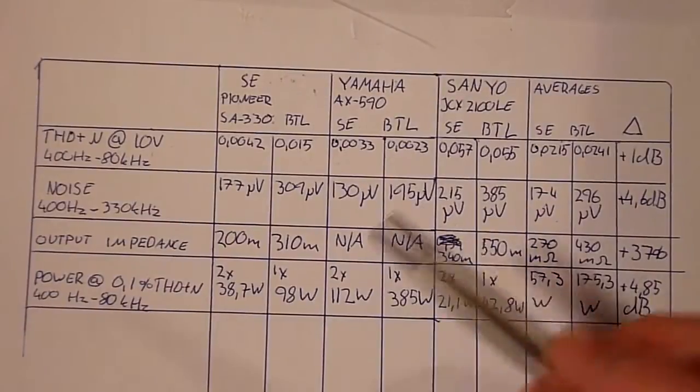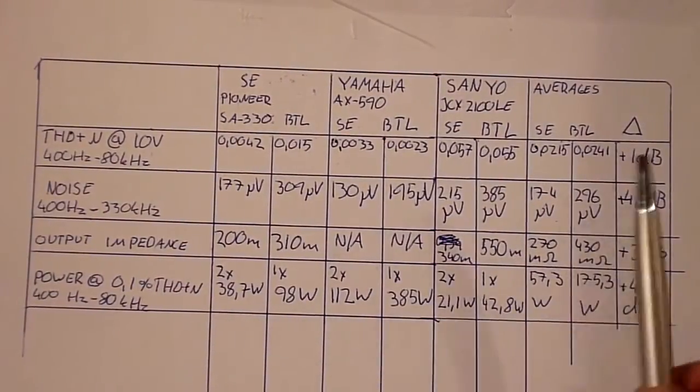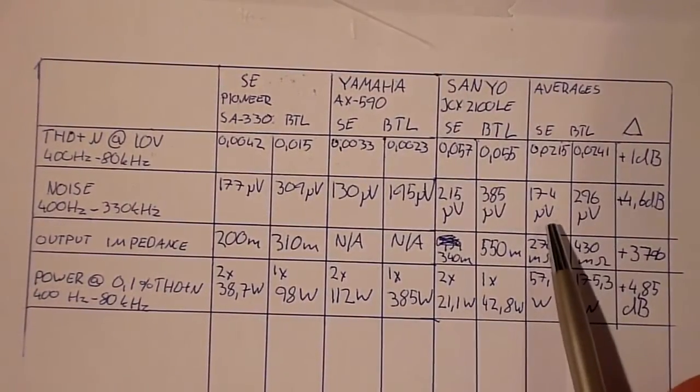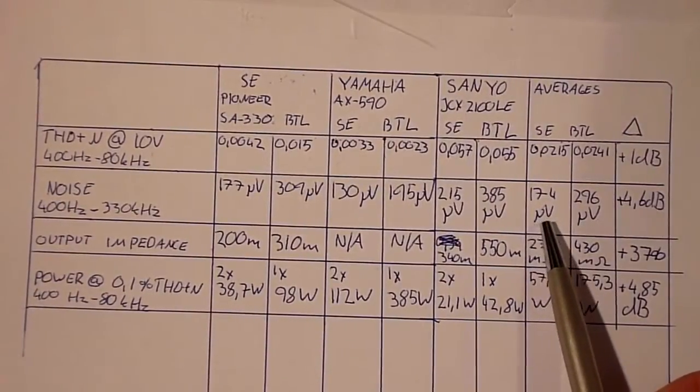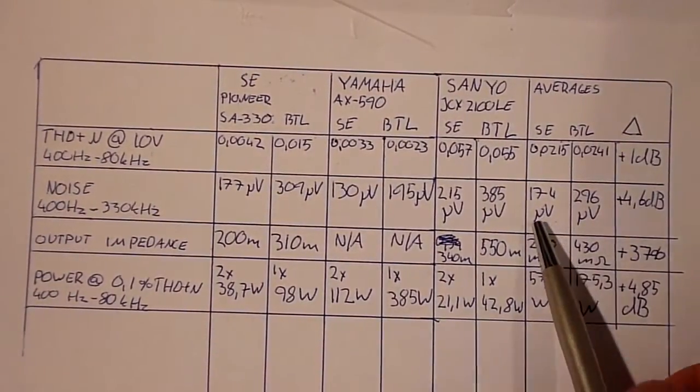Noise. This is where I think we spot the biggest difference. Because the single-ended units, tests averaged 174 microvolts of noise when with shorted input,